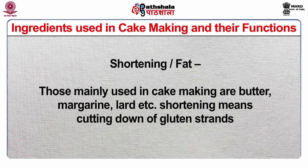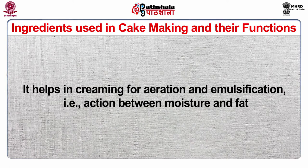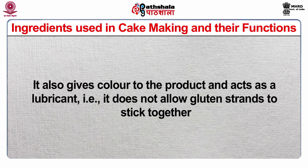Shortening and fats — those mainly used in cake making are butter, margarine, lard, etc. Shortening means cutting down of gluten strands. It helps in creaming for aeration and emulsification, that is, action between moisture and fat. It also gives color to the product and acts as a lubricant — it does not allow gluten strands to stick together.